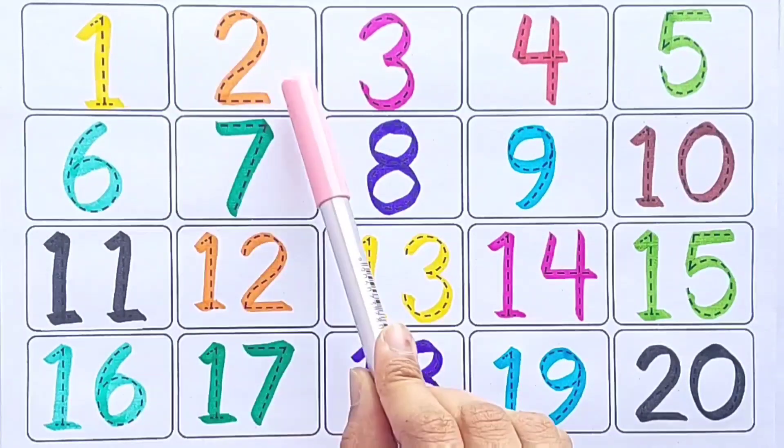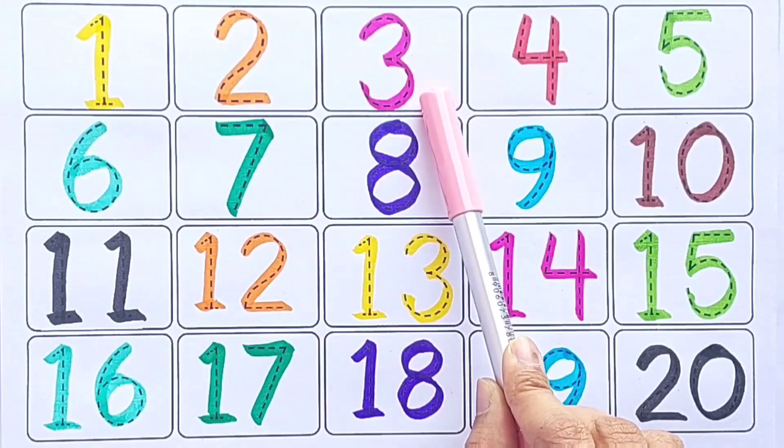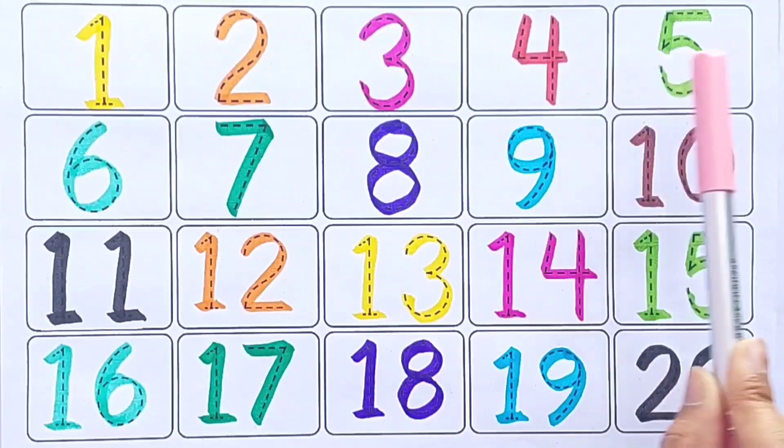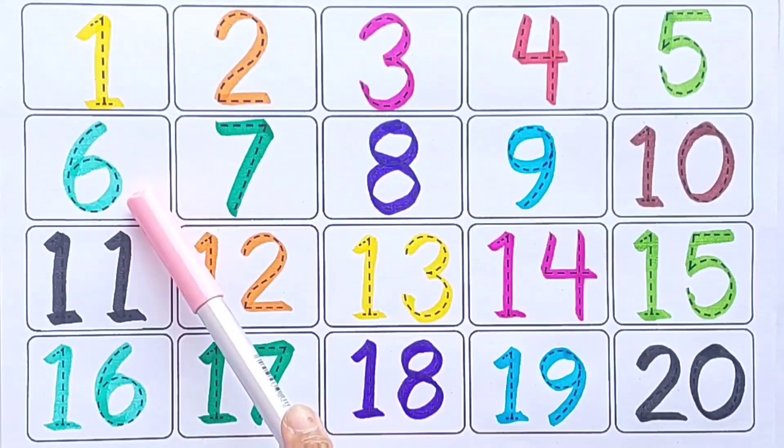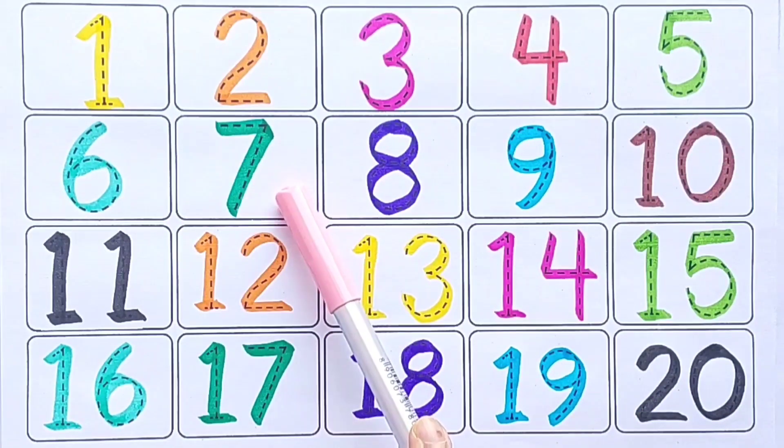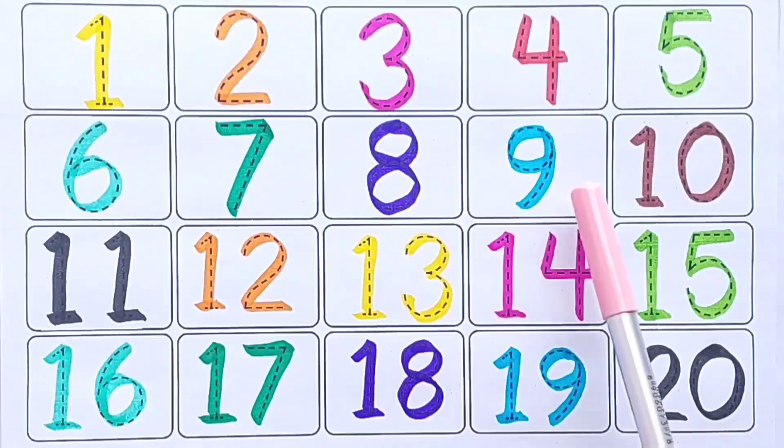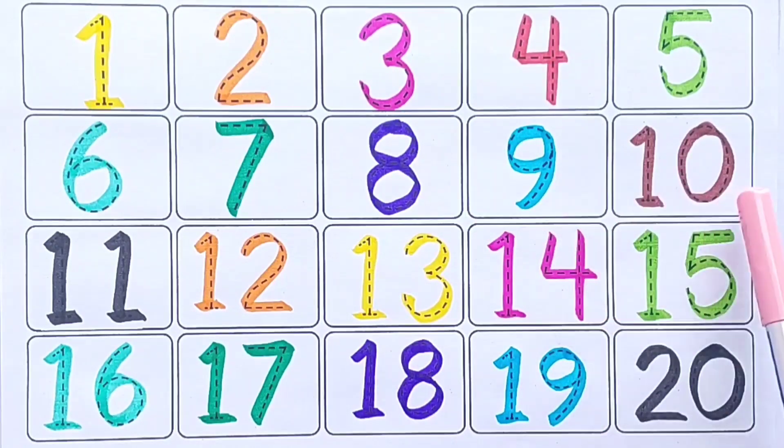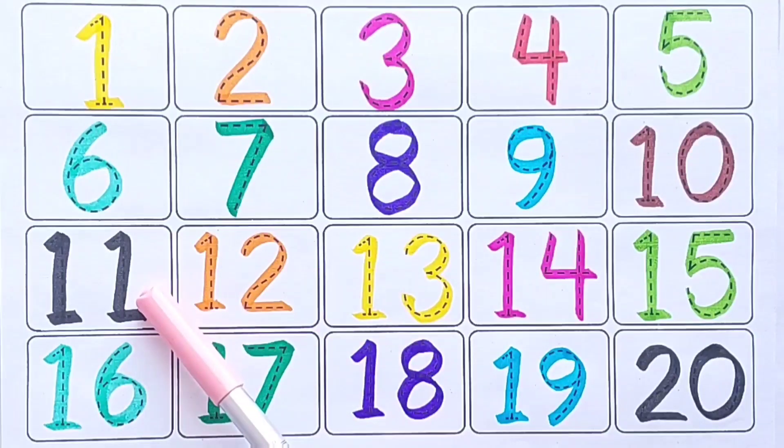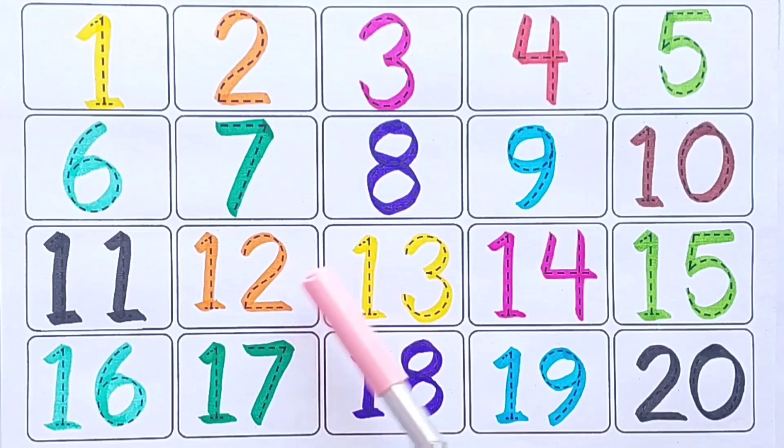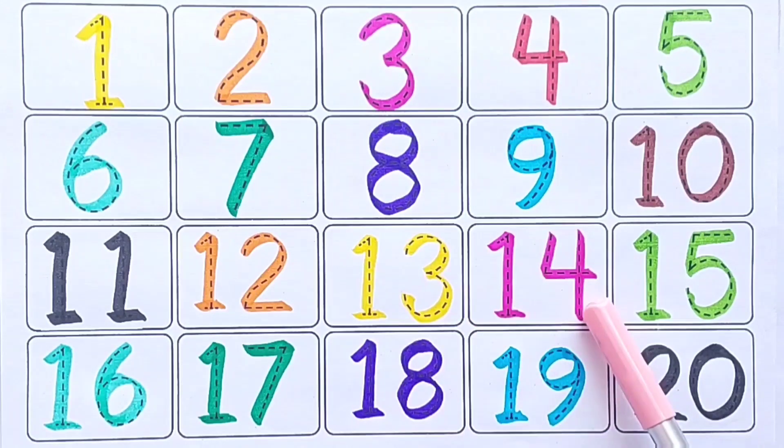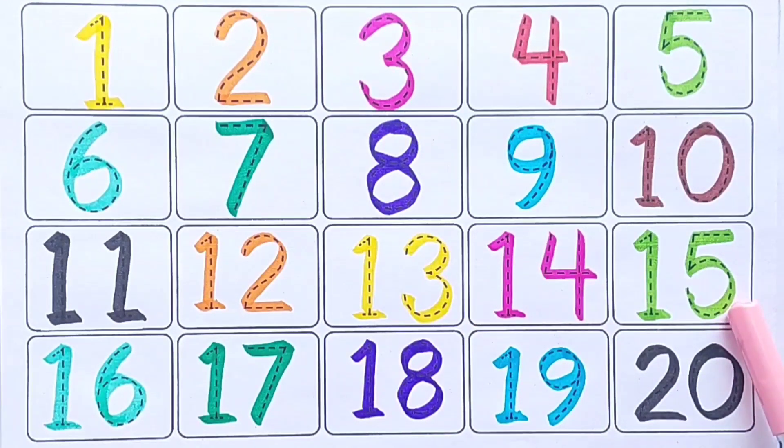One, Two, Three, Four, Five, Five, Six, Seven, Eight, Nine, Ten, Eleven, Twelve, Twelve, Thirteen, Thirteen, Fourteen, Fifteen, Sixteen, Sixteen, Seventeen, Eighteen, Nineteen, Nineteen.